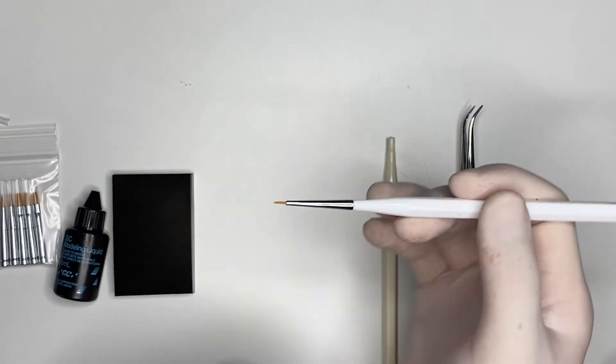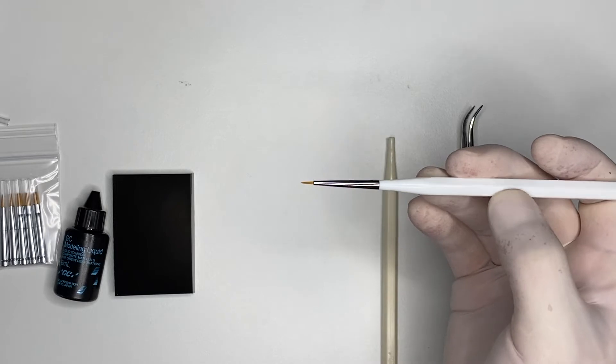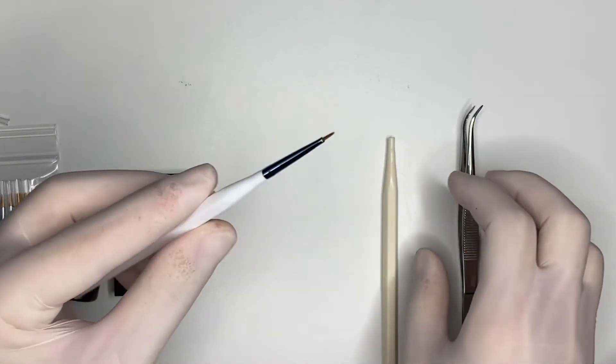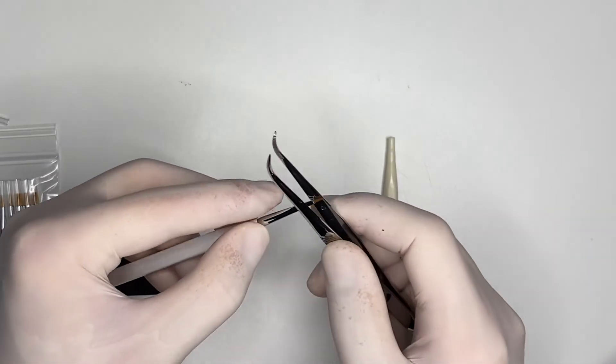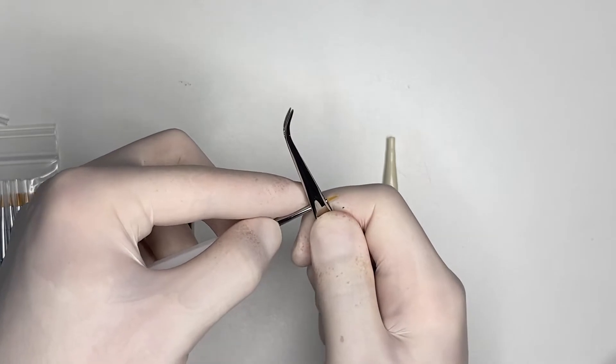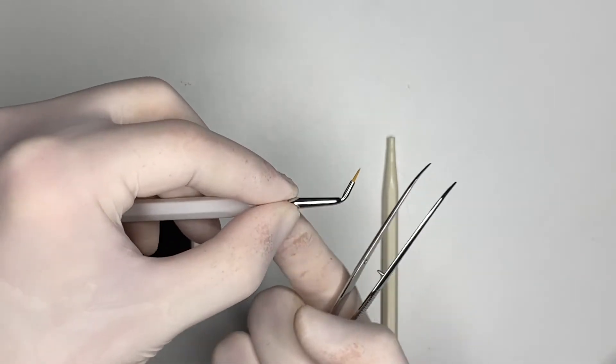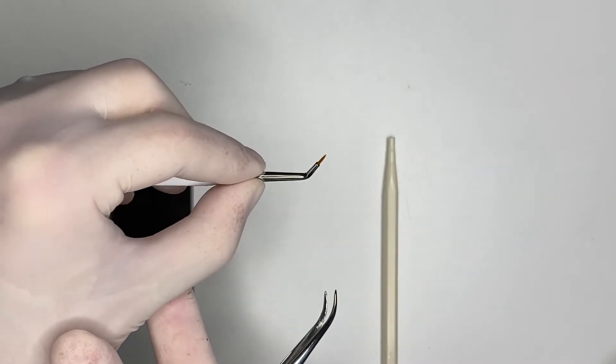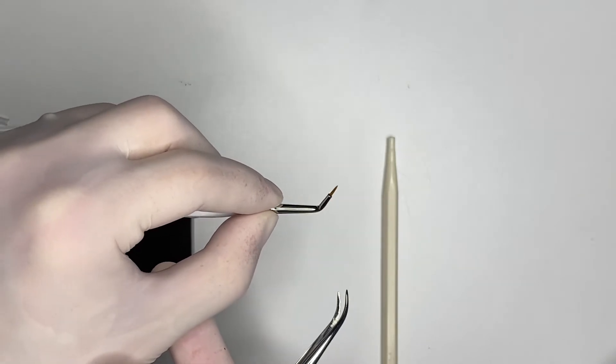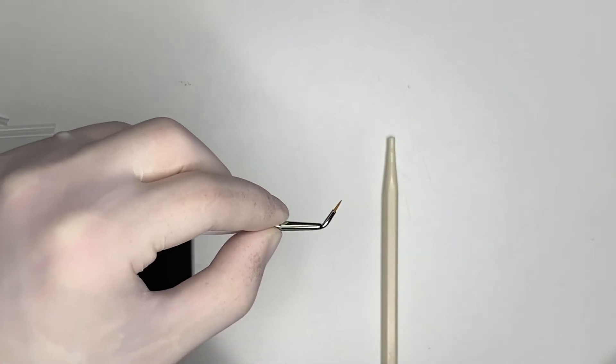But if you use your plier and you pinch the round brush next to its bristles, and then you angle it at a 45-degree angle, you're going to have plenty of access for your occlusal cavities on the lateral teeth.